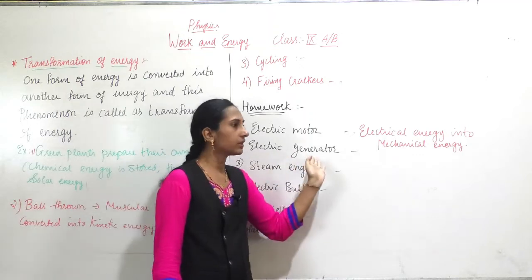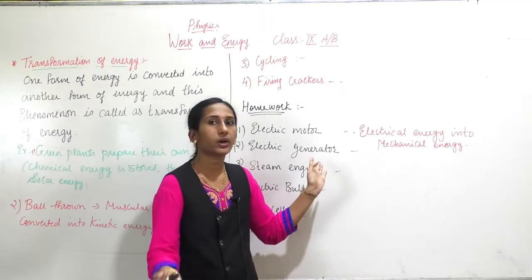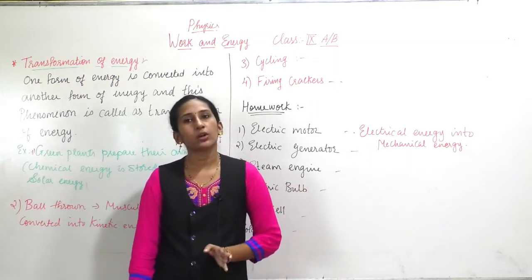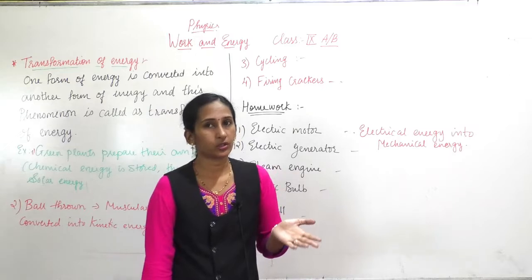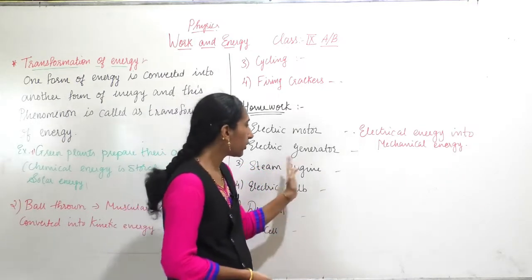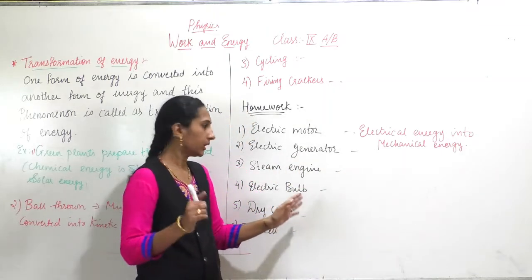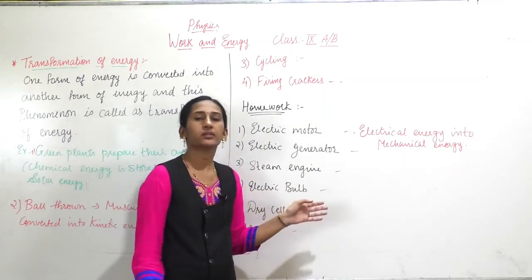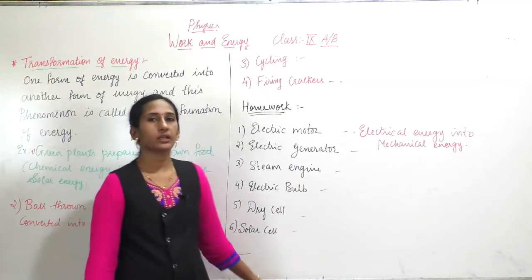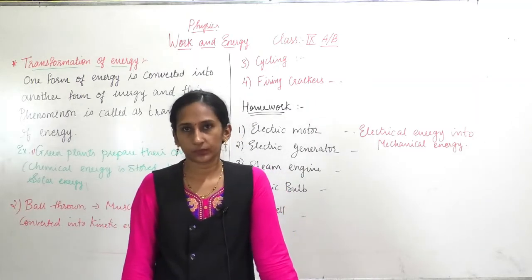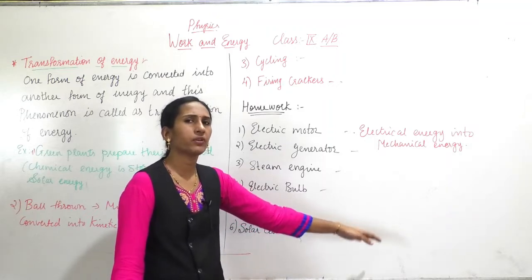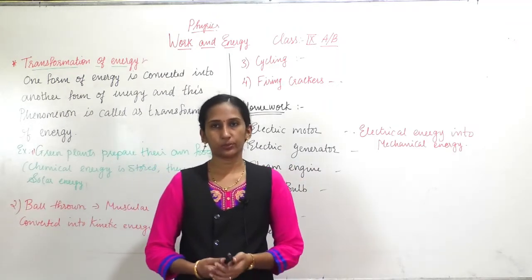For the electric generator, think about what energy you must give as input and what energy you get back. For the steam engine, consider what energy is needed to prepare steam and what that energy does to the engine. For the solar cell, it works on sunlight — write down which type of energy it uses and which type it gives out. Send your answers to me.